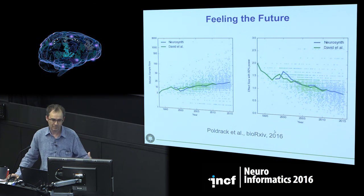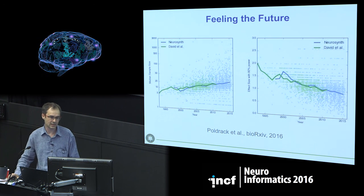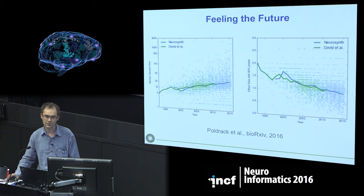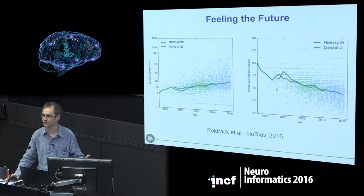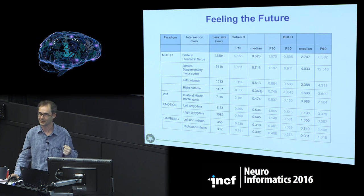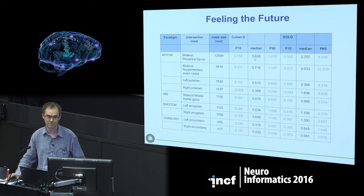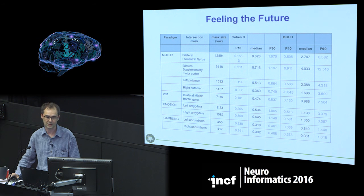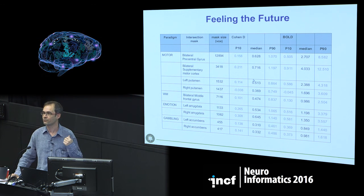A very recent paper on archive is looking at the median sample size of fMRI studies. Today the median sample size is about 25 subjects. For 25 subjects, the effect size you would need to detect with reasonable power is about 1.0. But the median effect size in fMRI studies across various paradigms - motor, working memory, emotion - is actually around 0.3 to 0.6. So we are fundamentally underpowered.